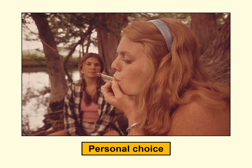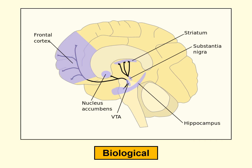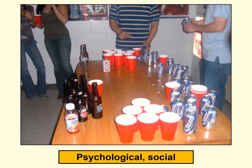We often talk about drugs as a personal choice, and clearly the decision to use or not use drugs is a choice each individual can make. At the same time, we understand that decisions about using drugs are influenced by various aspects of each individual's neurobiology — we'll spend a fair bit of time this semester on this. Biology plays a role in those personal decisions, as do psychological and social factors.